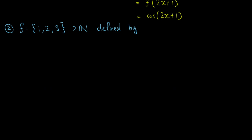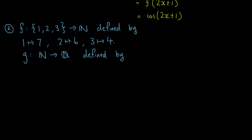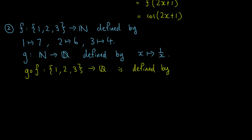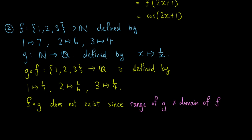As a second example, let f be the function from the set {1, 2, 3} to the set of natural numbers defined by 1 maps to 7, 2 maps to 6, and 3 maps to 4. g is a function from the natural numbers to the rational numbers where g of x equals 1 over x. Then the composition g ∘ f is a function from {1, 2, 3} to the rationals defined by 1 maps to 1/7, 2 maps to 1/6, and 3 maps to 1/4. Notice that f ∘ g does not exist since the range of g is not equal to the domain of f, because f is only defined on {1, 2, 3}.